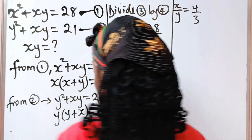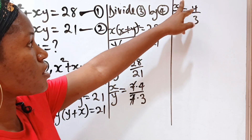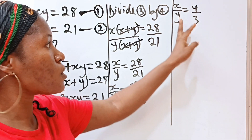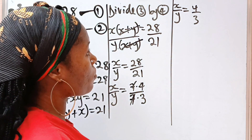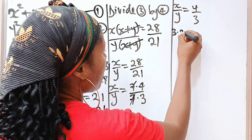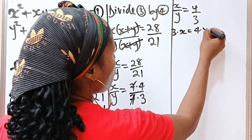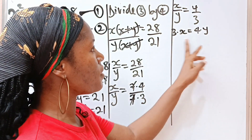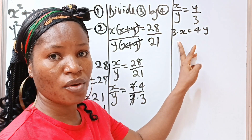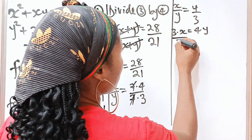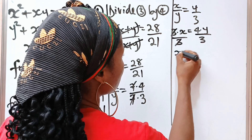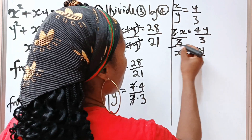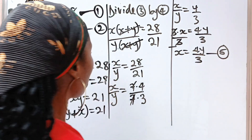Now, if we make x the subject of the formula: cross multiplying gives 3x equals 4y. Dividing both sides by 3, we have x is equal to 4y over 3. Let's call this equation 5.